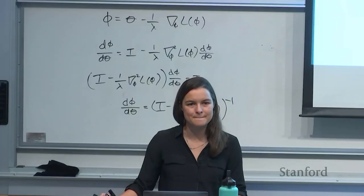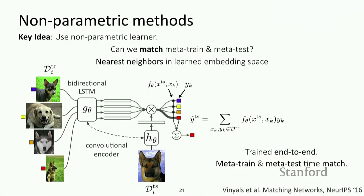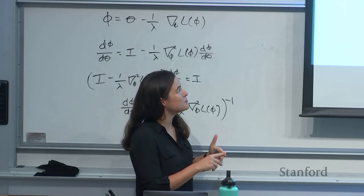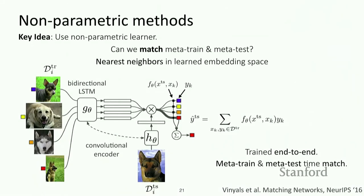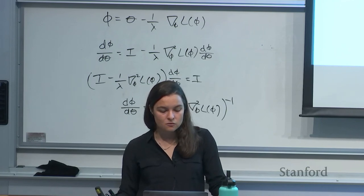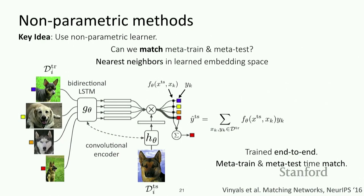The motivation for using an LSTM was that information about two different classes can inform each other. For example, if you're classifying between four types of dogs versus between a dog and a cat, the way you represent your embedding might differ. When classifying dogs versus cats, your embedding of a dog should represent something general to all dogs, whereas for fine-grained classification between two types of dogs, you want the embedding space to be more discriminative. Because of the LSTM, it does impose an order on the training data, though in this paper the order was chosen arbitrarily.